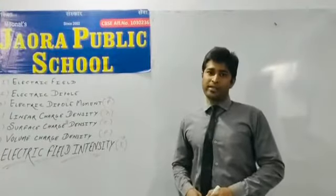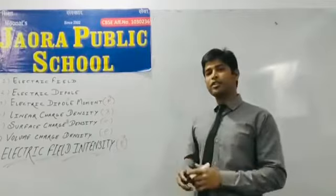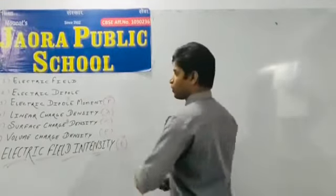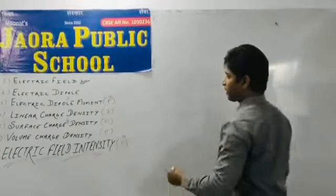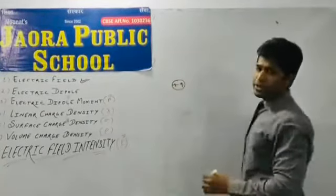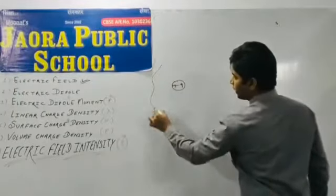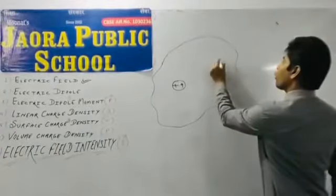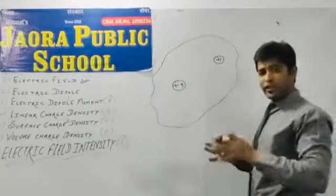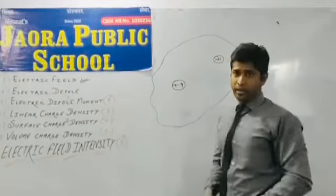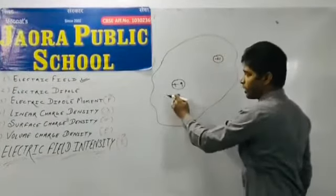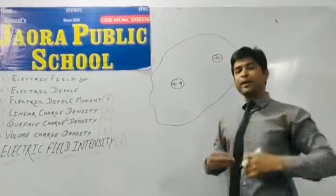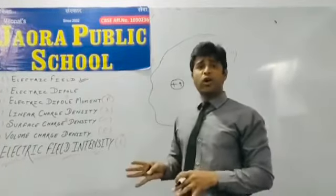So today our topics are very basic definitions of electricity. First definition, electric field. So what is electric field? Friends, किसी भी चार्ज के चारो और का वो अरिया जहां पर कोई भी चार्ज अट्रिक्शन और रिपलिशन फोर्स फिर करता है. The space around the charge in which any unit charge experiences an attraction or repulsion force.